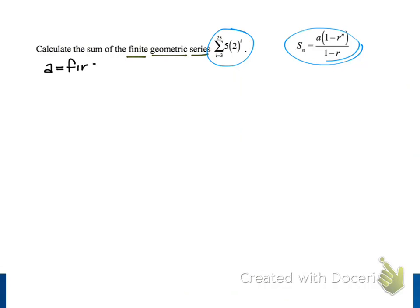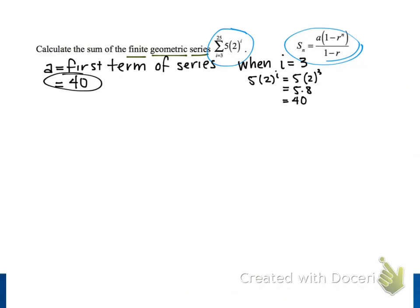The variable a represents the first term of our series. Since our series starts with i equals 3, we substitute 3 into the expression for the general term of our series, 5 times 2 to the i-th power. And the result is 5 times 2 cubed, which is equal to 5 times 8, and that gives us 40. And so our result is the first term is equal to 40, and that's our value for a.